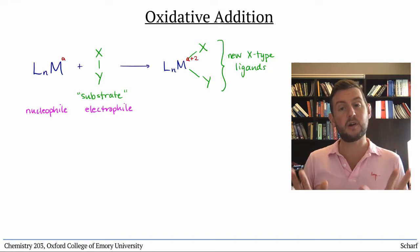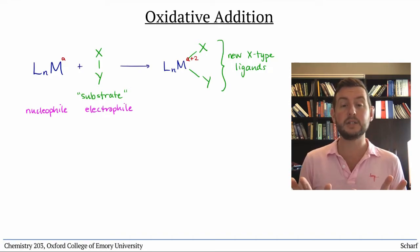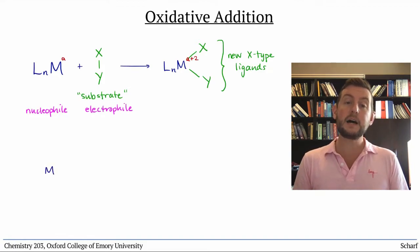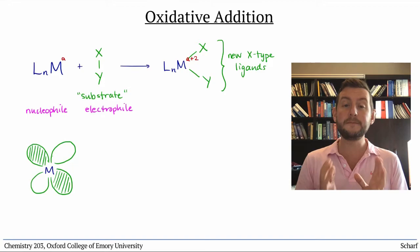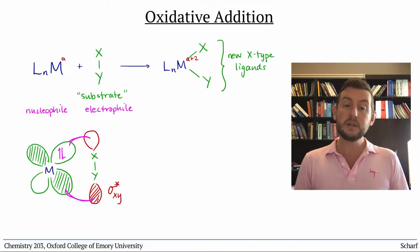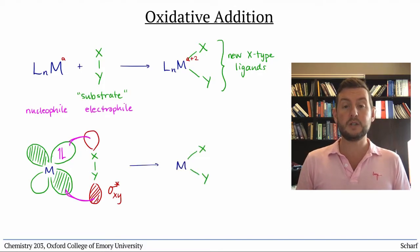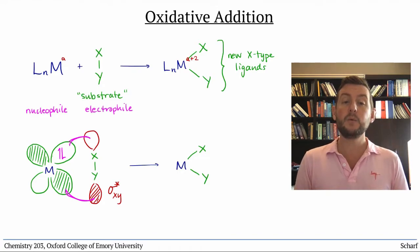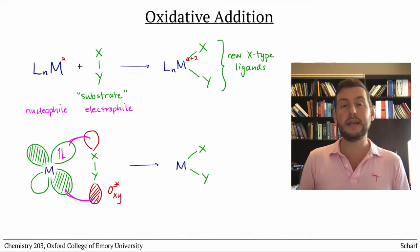There are several common mechanisms of oxidative addition. We'll focus on just one. Commonly oxidative addition occurs when a filled metal d orbital interacts with an empty sigma star orbital like this. The result is that the metal loses two electrons but gains two new ligands. We sometimes call this process insertion of the metal into the XY bond.